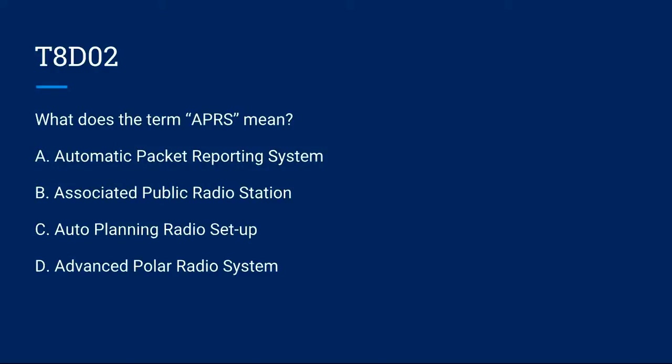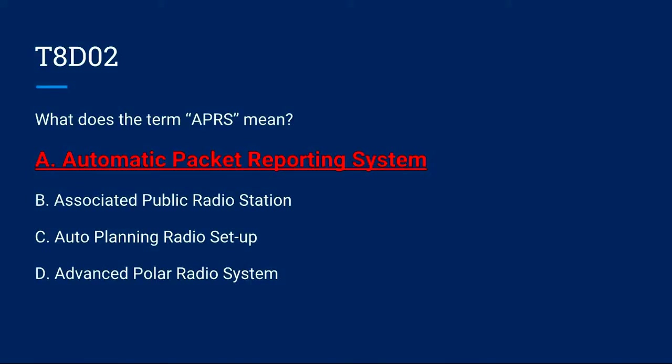T8D02: What does the term APRS mean? A. Automatic packet reporting system. B. Associated public radio station. C. Auto planning radio setup. Or D. Advanced polar radio system. The correct answer is A: automatic packet reporting system.